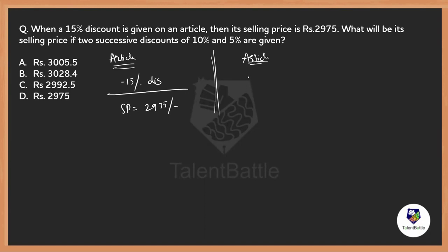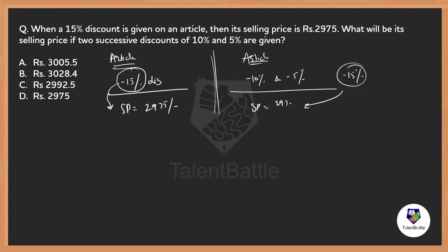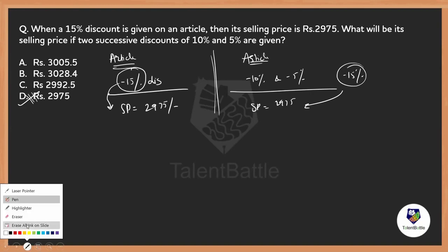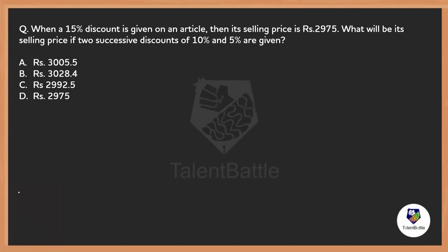10% discount and 5% discount — both are reductions. Most people will think: minus and minus gives minus 15%, which is the same as the original, so the selling price should still be 2975 — option B. But that is wrong. Successive discounts are completely different from a single combined discount.